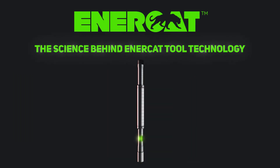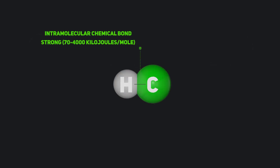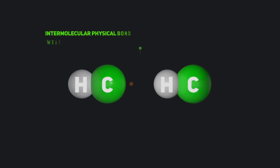The science behind Enercat tool technology. It was once thought that oil production problems were primarily chemical, meaning they are intramolecular, or inside molecules. What was overlooked is that the problems are primarily physical, meaning they are intermolecular, or between molecules.